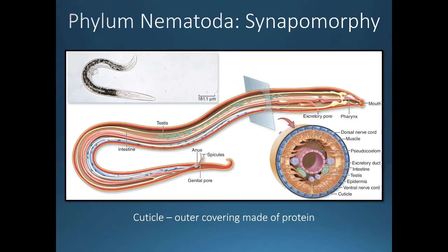Let's move to our first phylum of the ecdysozoans — the phylum Nematoda, our roundworms. All roundworms share one synapomorphy: they have a cuticle, an outer covering that surrounds the entire roundworm, and it is made of proteins.